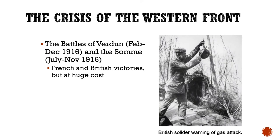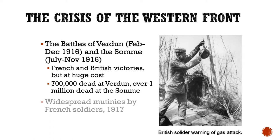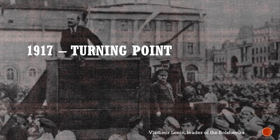While the war was being fought around the world, on the Western Front in Europe we see some of the largest battles. The Battle of Verdun and the Battle of the Somme were French and British victories, but at a huge cost — over 700,000 soldiers died at Verdun and some one million dead at the Somme. All of this was still resulting in what was largely a stalemate, and by 1917 we even started to see widespread mutinies among French soldiers. By 1917, the war was not going very well for anyone.